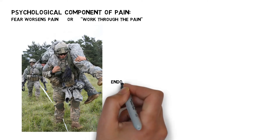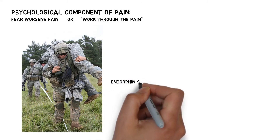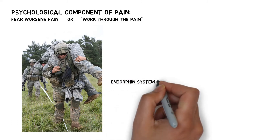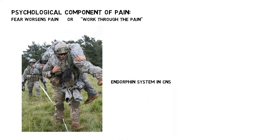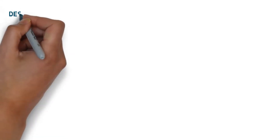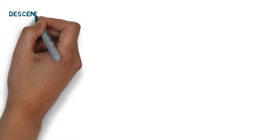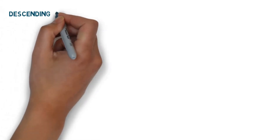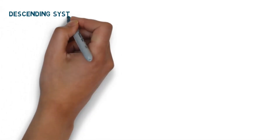Part of this pain variation can be attributed to the endorphin system in the CNS, but not all of it. There is a descending system from the brain to the pain input centers in the spinal cord that modulates the intensity of the pain.